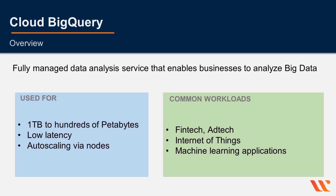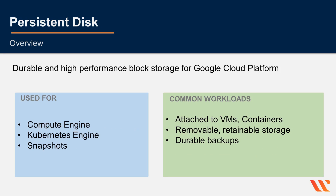Twitter announced that they're migrating 300 petabytes of data into a Bigtable/BigQuery solution. Persistent Disk is durable and high-performance block storage. It provides SSD and hard drive storage that can be attached to instances running in either Google Compute Engine or Kubernetes Engine. It's useful for creating backups, snapshots, and portable storage.